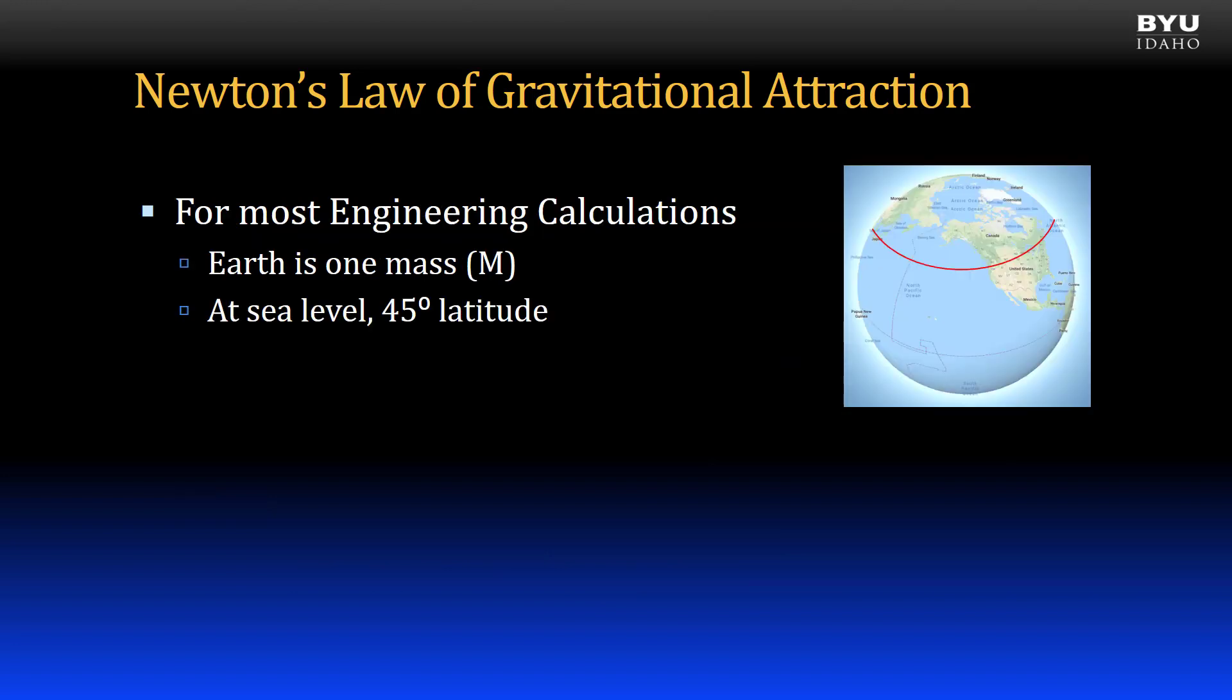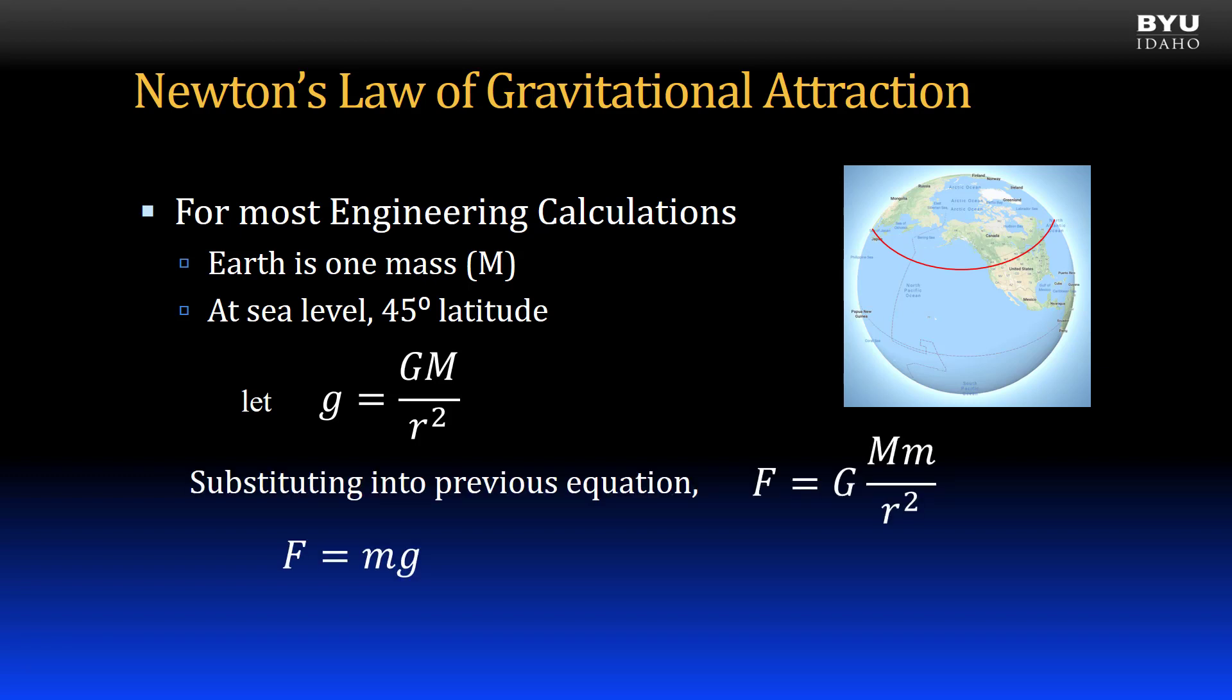For most engineering calculations, however, we will use the Earth as one of the masses, and we will assume we are at sea level. With these assumptions, we can simplify the previous equation with a substitution. We will let lowercase g equal the gravitational constant times the mass of the Earth divided by the radius of the Earth squared. It is the radius of the Earth, since we are assuming sea level. If we substitute that value into the previous equation, we are left with a much simpler form of force is equal to mass times lowercase g, or weight caused by Earth's gravity equals mass times g.